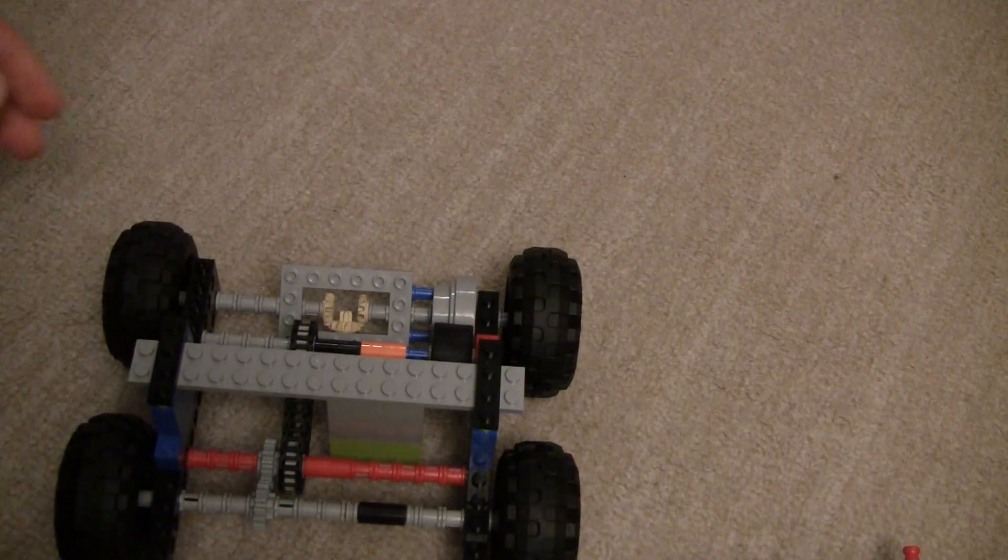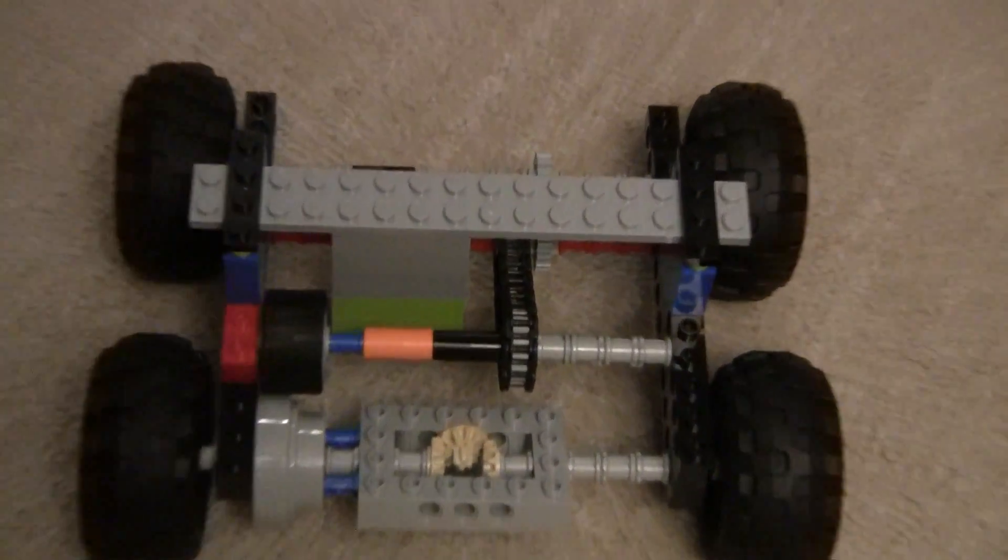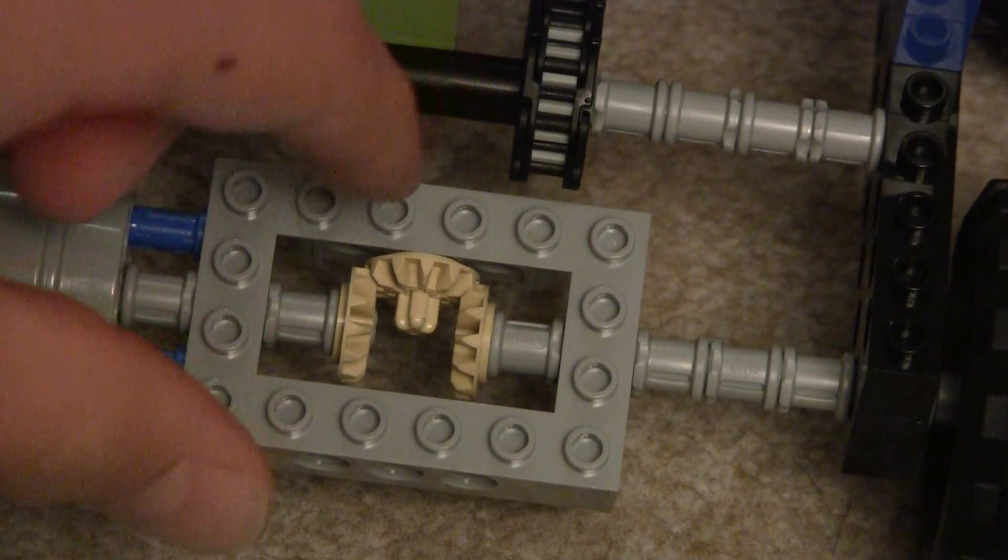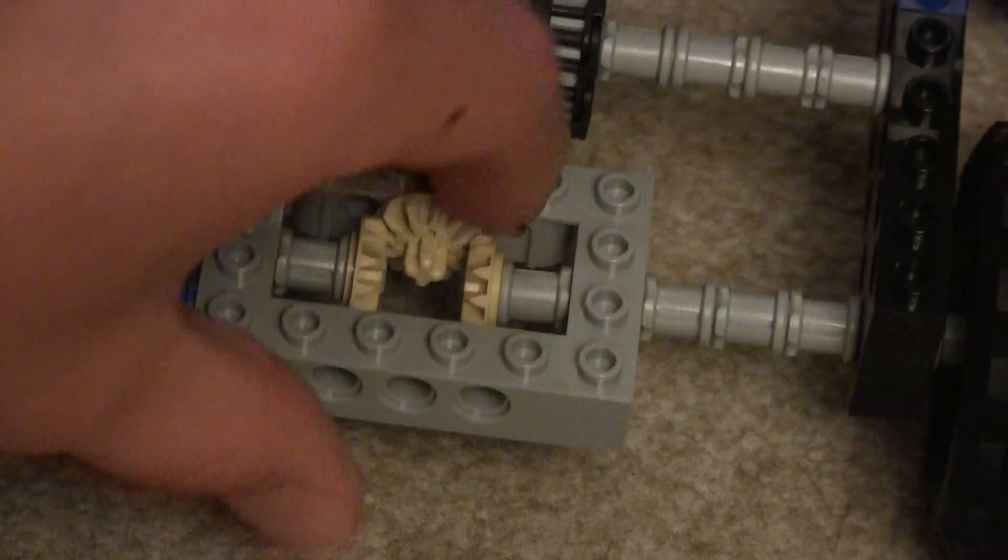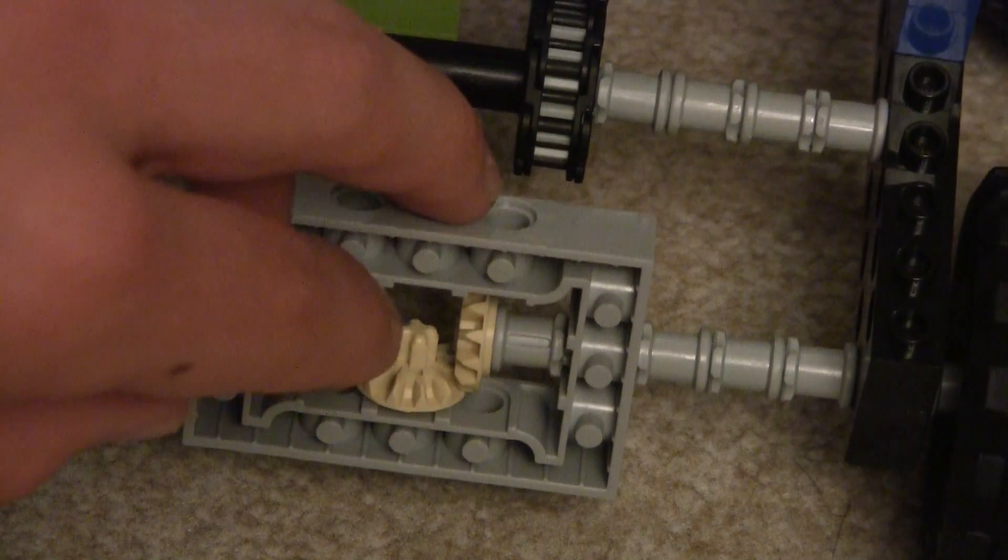So I'll show you the differential one more time up close, now that you understand what it's supposed to do. When this thing spins, it spins this gear, which goes around and spins these two axles.